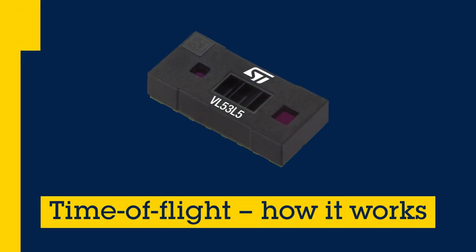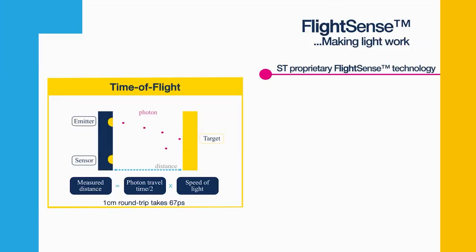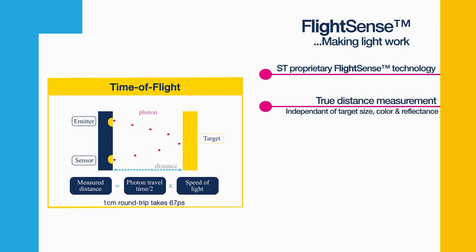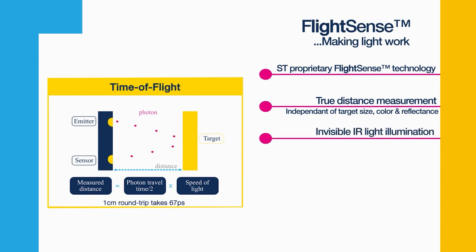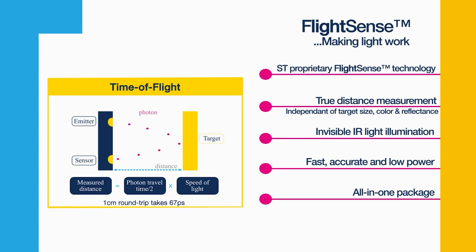So what is the time-of-flight technical principle and how does it enable the presence use case? The time-of-flight sensor does an actual distance measurement that is independent of the target color, shape, or reflectance. It uses invisible infrared light, is highly accurate, and has very low power consumption. It is also contained in an all-in-one package with the emitter and receiver included, and it is easy to integrate and hide behind a cover glass on a PC or laptop.